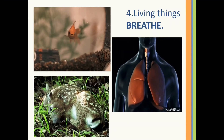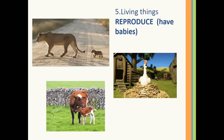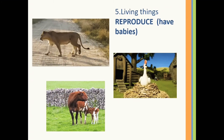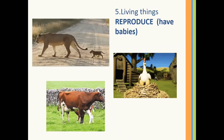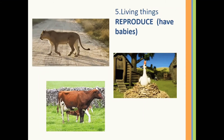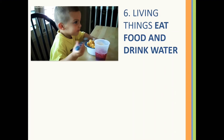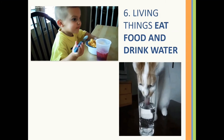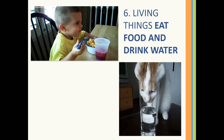Living things reproduce — say the word 'reproduce' — that means to have babies. Birds lay eggs. Animals like the lion, cow, and dog give birth to young ones. Living things eat food and drink water. Can you stay hungry for a whole day? No, right?